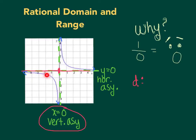So this piece of the graph is going to get closer and closer to that x equals 0, but never hit it. And this piece of the graph is also going to get closer and closer to x equals 0.